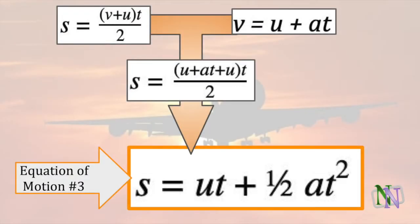If we now substitute equation 1 into equation 2, we can make a third equation. S equals UT plus a half AT squared. Here V is the variable which is not used.